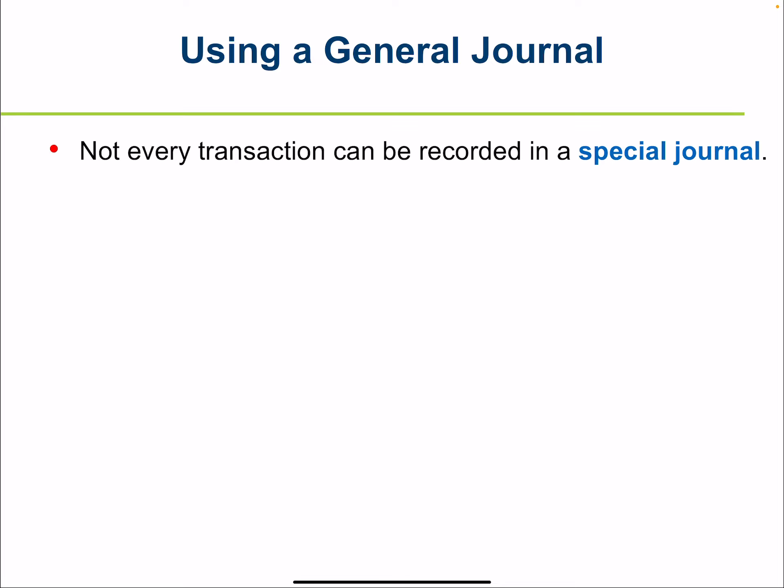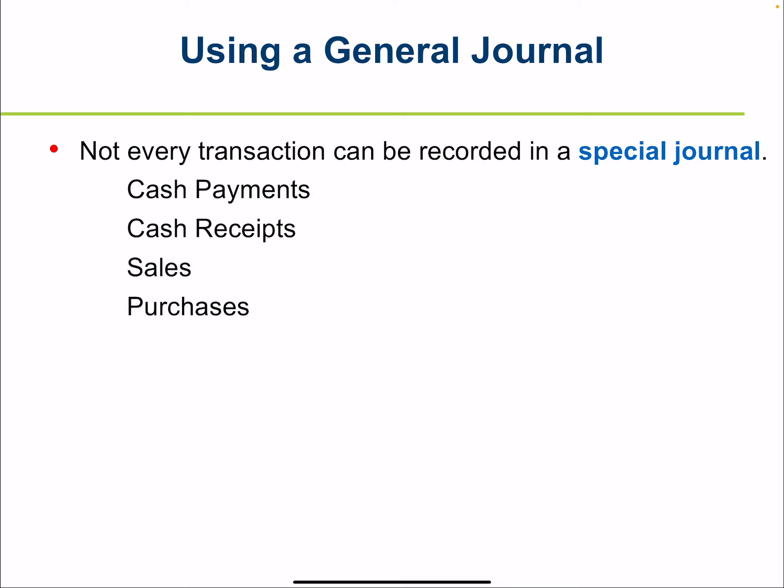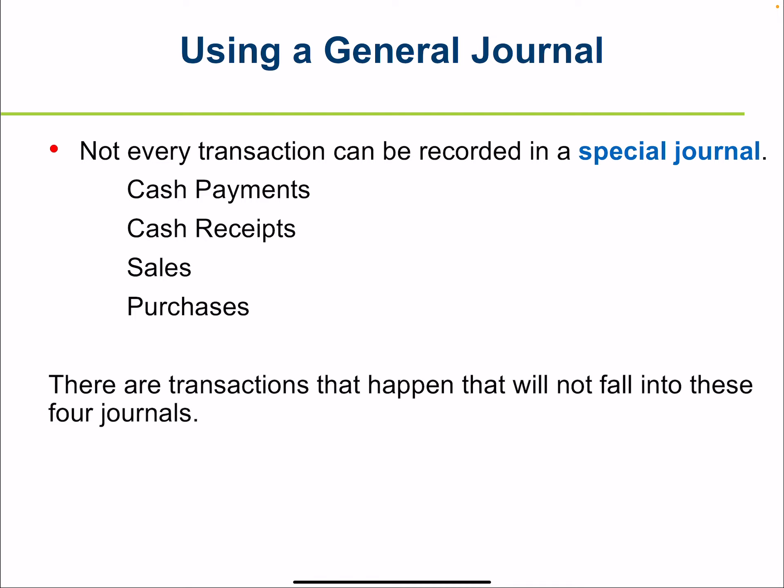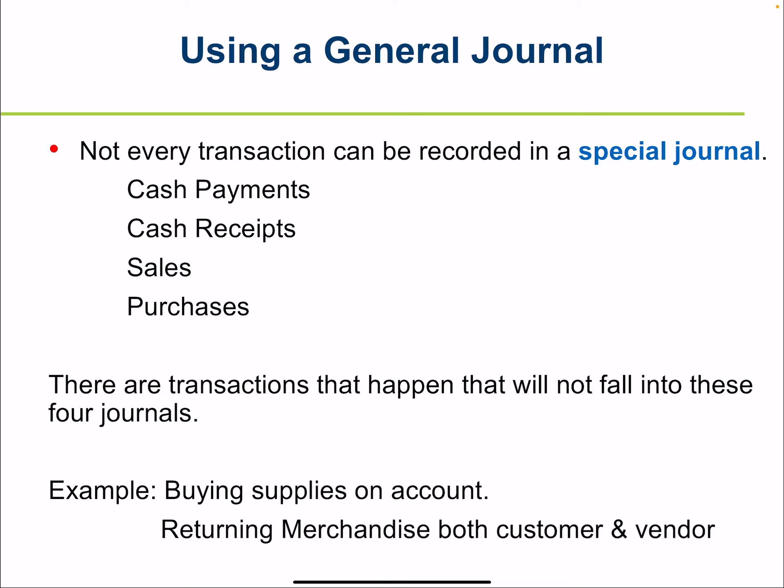Not every transaction can be recorded in a special journal, such as the special journals we have recorded so far. For example, when Three Green buys store supplies on account, the transaction results in a debit to supplies and a credit to accounts payable. The transaction is not a cash payment, so it can't be recorded in the cash payments journal, nor is it a purchase of merchandise on account, so it can't be recorded in the purchase journal.